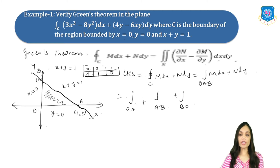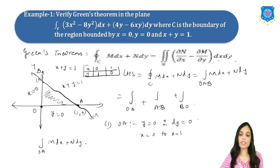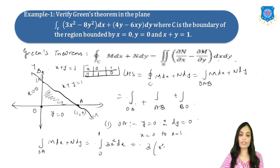For path O→A, we have y = 0 so dy = 0, and x varies from 0 to 1. Substituting y = 0 and dy = 0, the integral reduces to the integral from 0 to 1 of 3x² dx. Evaluating: 3 times x³/3 from 0 to 1, which simplifies to 1. So the first answer is 1.